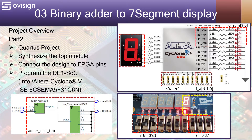In Part 2 we are going to create a Quartus project, synthesize the top module, then connect the design to the FPGA pins and program the DE1 SoC board. This project can also be implemented on other Intel FPGA boards. You should be able to customize the project depending on your board's number of switches, LEDs, or 7-segment display.